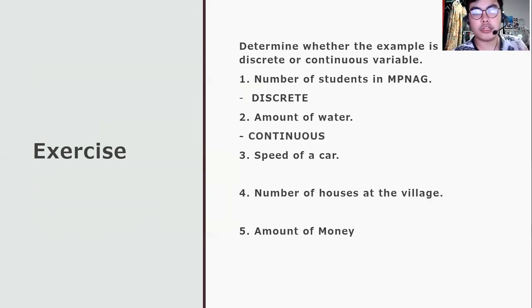While the amount of water is continuous. Why? It's because it cannot be counted. Besides, it can be measured with a decimal or a fraction. Like the amount of water, the speed of a car is continuous because it is uncountable. It's not countable, really.